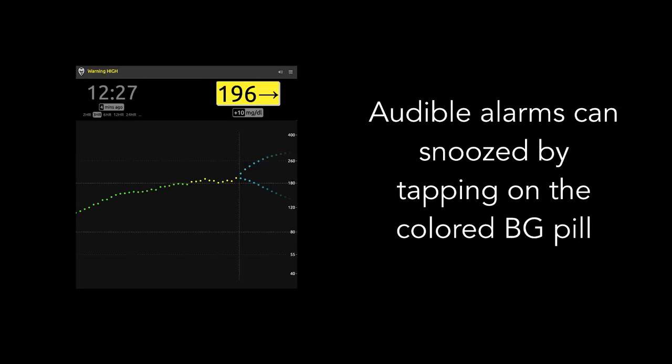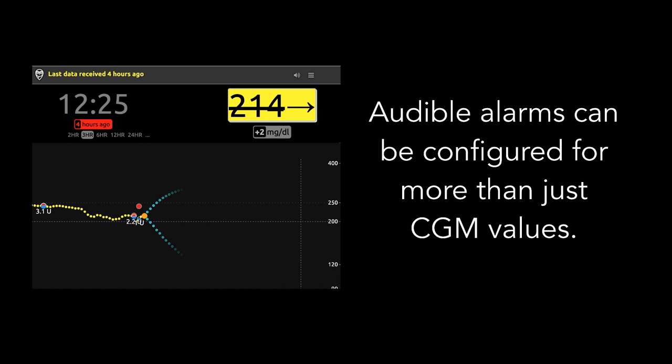Alarms are also a built-in and customizable feature within Nightscout. When your data goes beyond your designated warning or urgent thresholds, your BG box will turn yellow or red and music will play in the background. You'll see a message about the source of the alarm at the top of your Nightscout site — for example, 'Warning: BGs are high' and it turned yellow. You can tap on the BG box and it will show you snooze options for silencing your audio alarm. The alarms can also be configured for more than just CGM values — for example, if your data isn't uploading, you can have last data received show an X through the BG indicating that the CGM data is old.